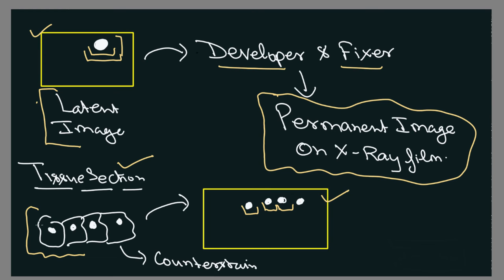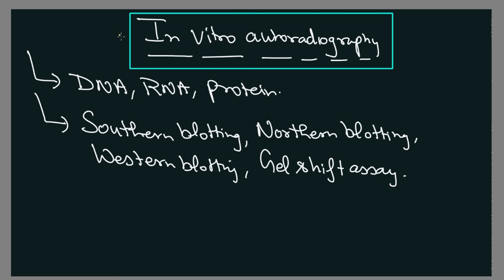If you want to see a clear image of the tissue section, you can also counter-stain with dyes which are used in microscopy. In the case of in vitro autoradiography, we are generally going to see different biomolecules like DNA, RNA, and protein. Hopefully you remember the different blotting techniques like southern blotting, northern blotting, western blotting, and various gel shift assays. In all these techniques, autoradiography is widely used to visualize DNA, RNA, or protein.